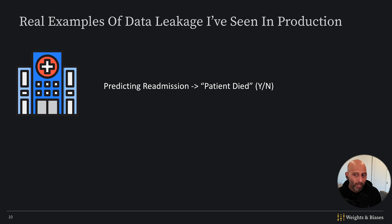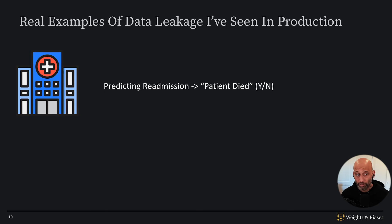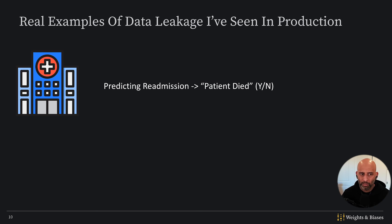So what can you do about data leakage? There are a lot of things: having good evaluation practices, looking at feature importances, monitoring your production performance — though those are all separate topics in their own right. I just wanted to mention data leakage so that you can have an awareness and think more carefully about it, including the kind we discussed in this course with respect to images from the same camera crossing dataset boundaries.